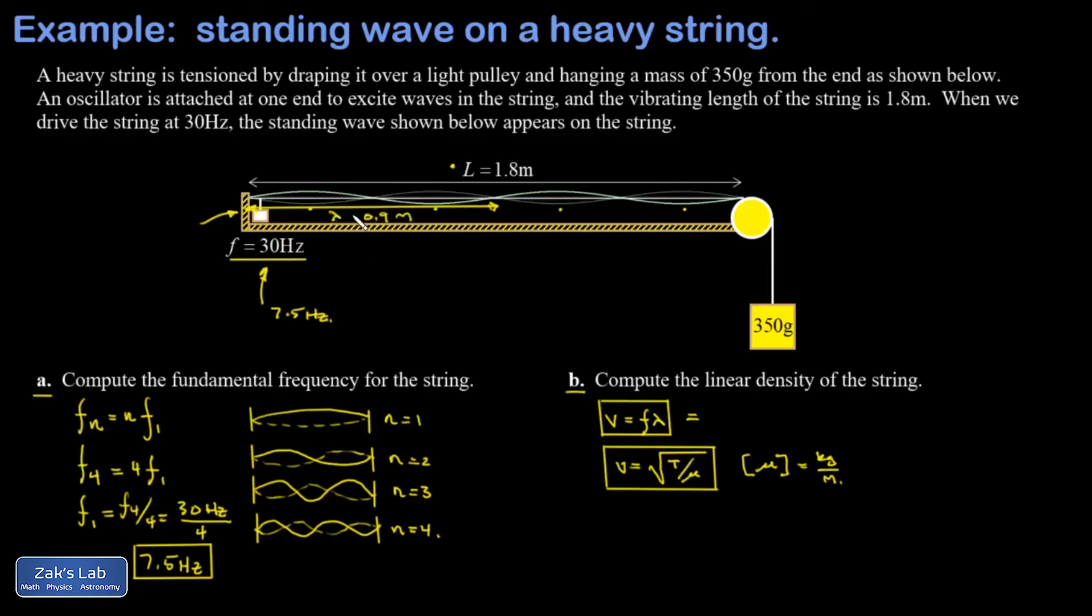So that's lambda for the fourth harmonic, and the frequency for the fourth harmonic was 30 hertz. So I can take 30 hertz times 0.9 meters and I get a wave speed of 27 meters per second. Now that wave speed is going to be the same for every harmonic that we find, and it's determined by how much tension we put on the string and how heavy the string is.